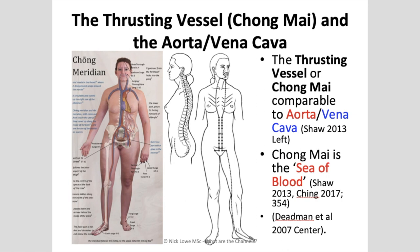Let's start with the thrusting vessel, the Chong Mai, and its correlation with the aorta and the vena cava. There is a direct anatomical correlation between these channels in the way they flow in the body. The aorta and the vena cava are the largest artery and vein in the body respectively, and the Chong Mai in Chinese medicine is described as the sea of blood. Not only do the pathways mirror each other almost exactly, the Chong Mai gives a vascular description. The ancient Chinese would have been able to feel the pulsing of the aorta through the abdomen, so there's no doubt that when they talked about the Chong Mai, they were directly referring to the aorta and the vena cava.